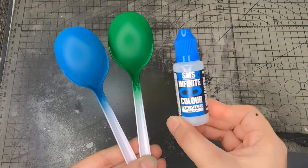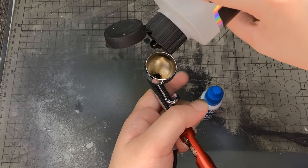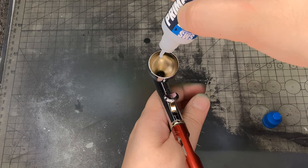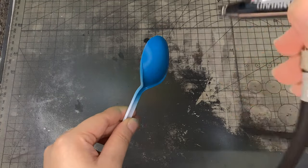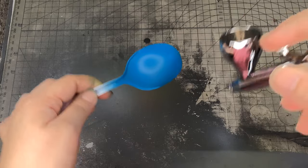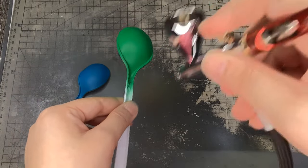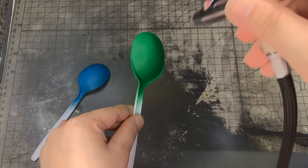Now, let's test out the varnishes and see if these paints are durable enough for Gunpla. The infinite color range has a flat clear and a semi-gloss clear. The ratio that I use for varnishes is one part varnish to one part thinner.